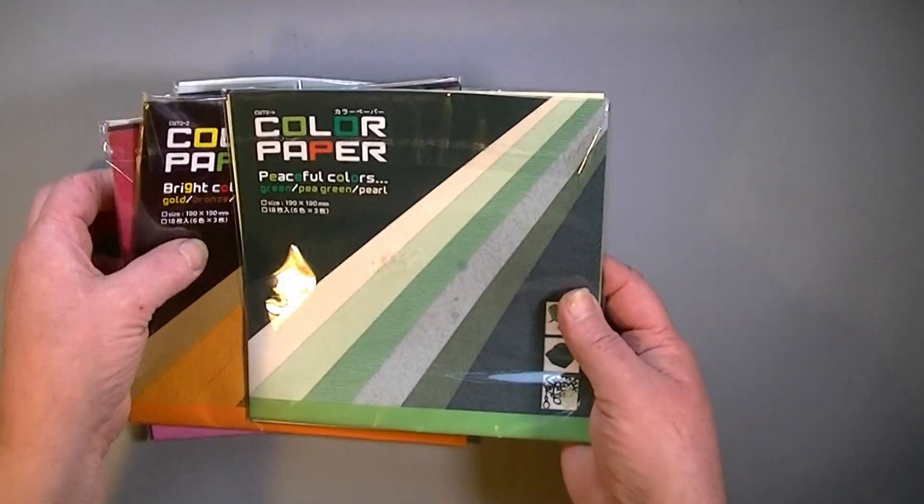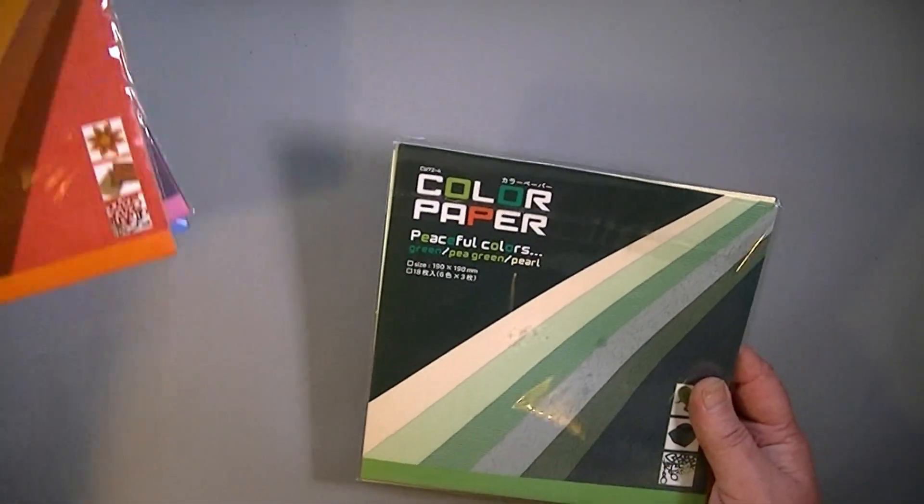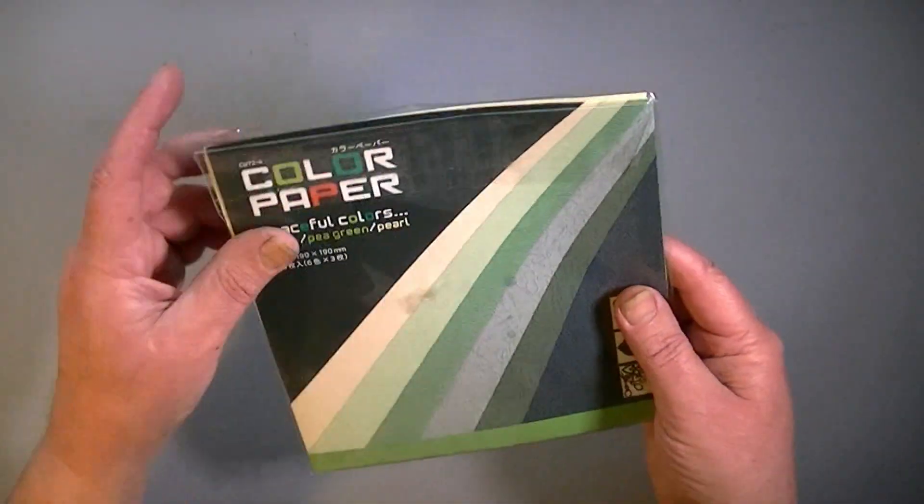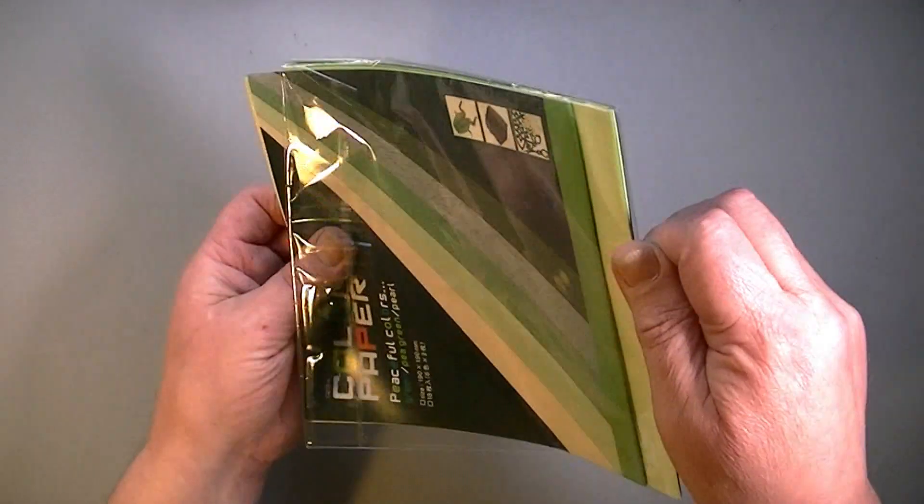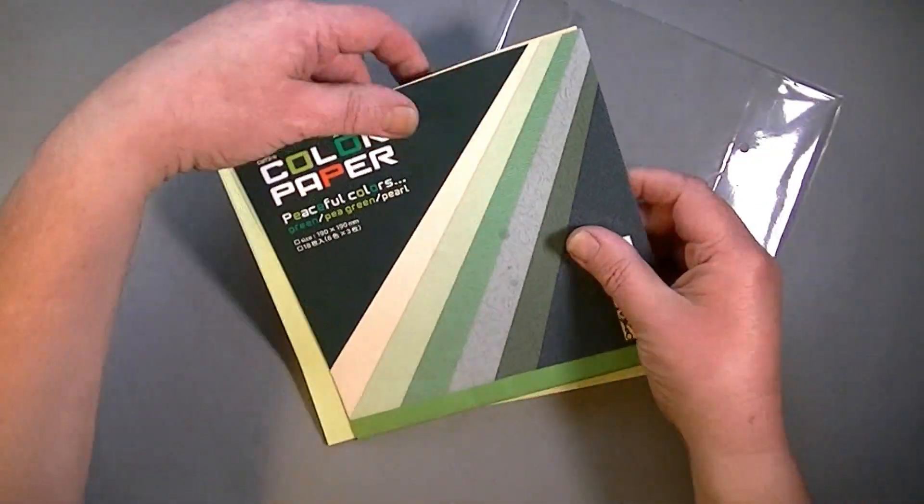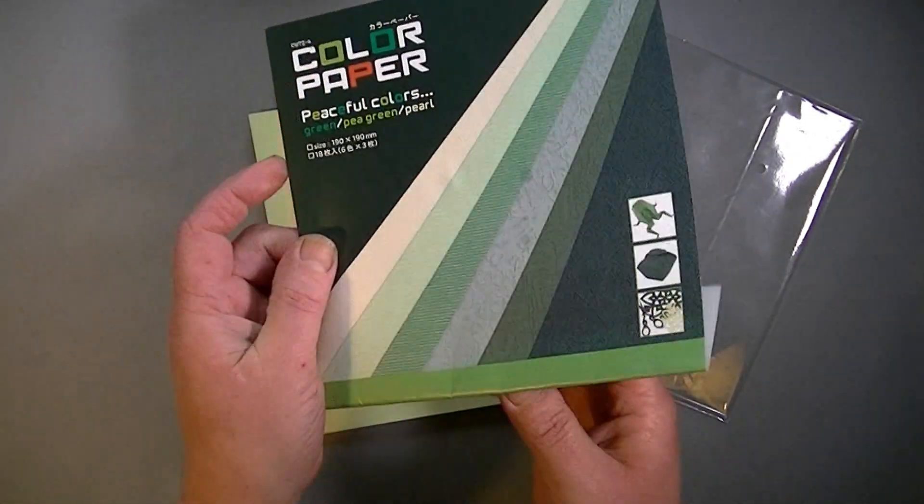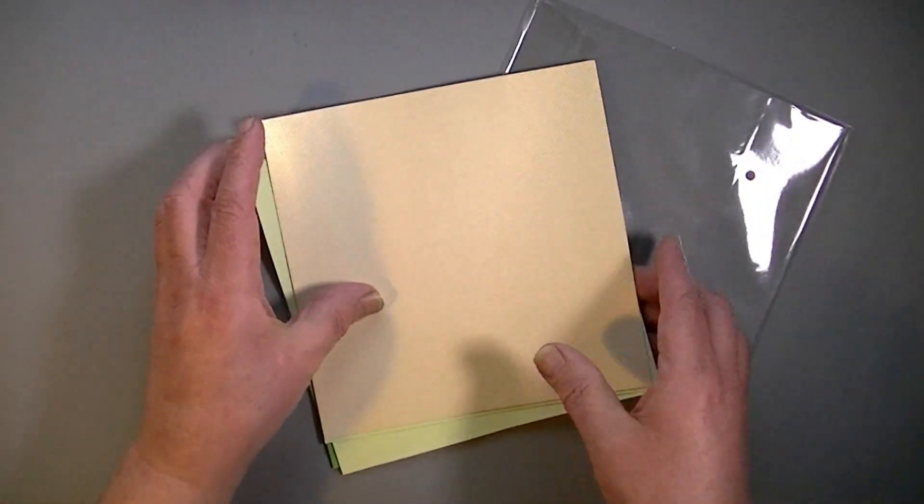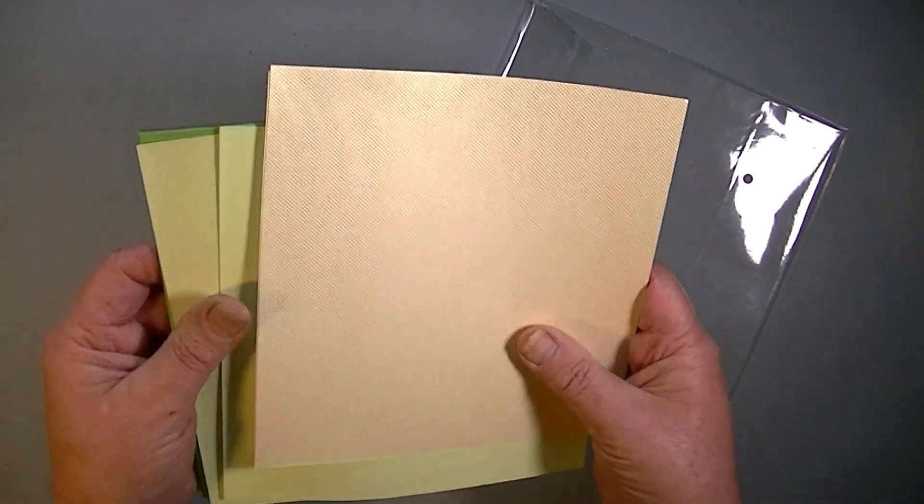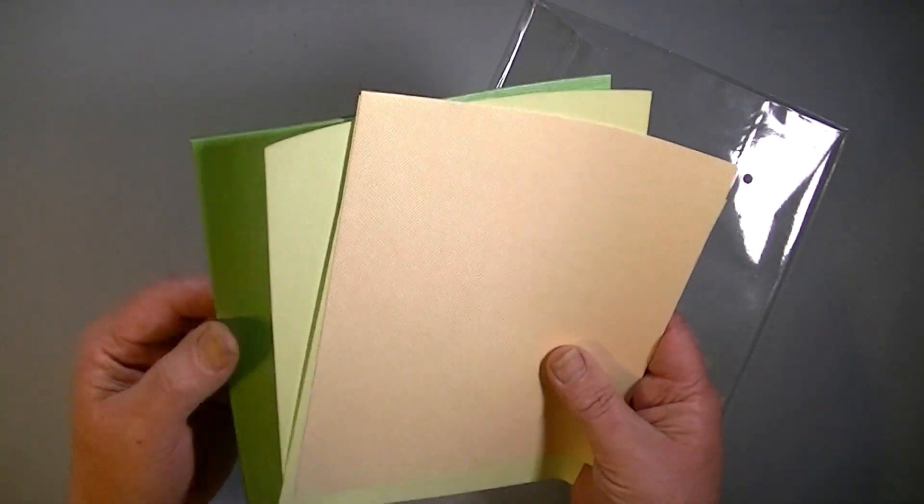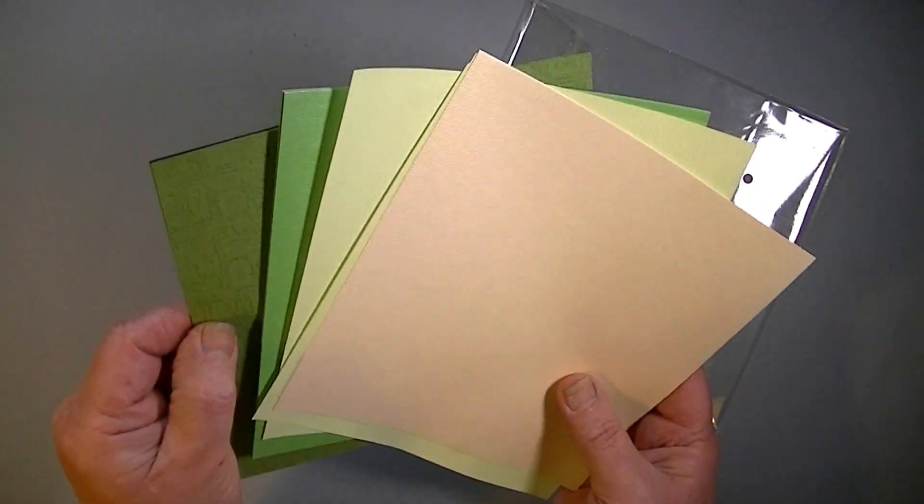So let's open one up. Let's put some to one side and have a look. So we have the cover sheet with no model, but it's not a big issue. And here's the paper. So green, pea green, and pearl, this is called.